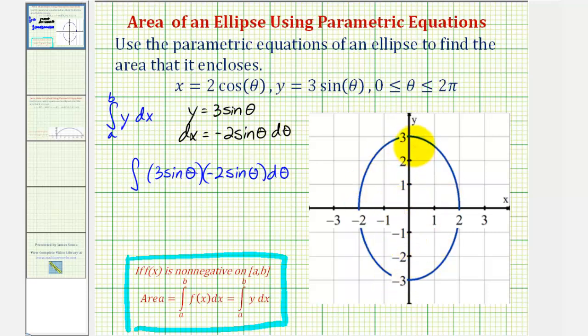Notice how if we found the area in the first quadrant here, we could then just multiply it by four because of the symmetry. But we know on the coordinate plane, if we wanted to find this area, we would have to integrate from x equals zero to x equals two.